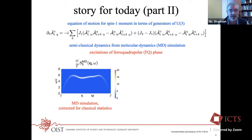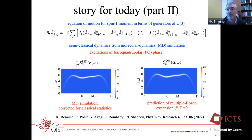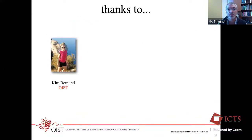Here is an MD simulation corrected for classical statistics, carried out in a ferroquadrupolar phase — these are the Goldstone modes of ferroquadrupolar order. And here is the prediction of a multiple-boson expansion, which is the correct generalization of spin wave theory to a spin-one system. You can see they are visually identical.